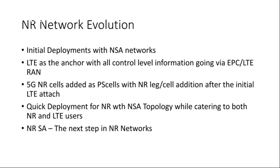In NSA network topology, the LTE network controls the UE for cell selection, reselection, handovers, and so on, while the NR network acts as an add-on or capacity layer providing additional throughput. The key advantage of NSA is quick deployment — you do not need to refarm any frequency from LTE. You can deploy NR in the mid-band TDD layer, such as 3.5 GHz, with LTE as the underlying network.